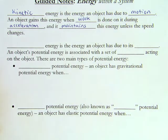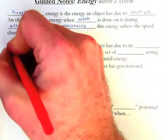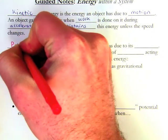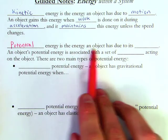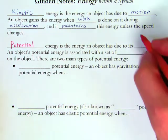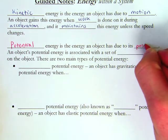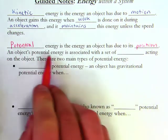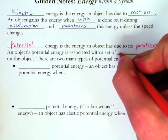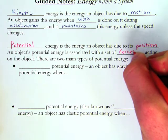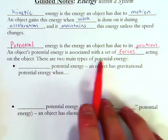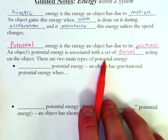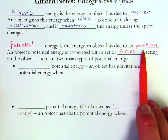Next, we have potential energy. Potential energy is the energy of an object that it has due to its position. So an object's potential energy is associated with a set of forces acting on an object. There are two main types of this potential energy, which doesn't have to do with motion, it has to do with an object's position.